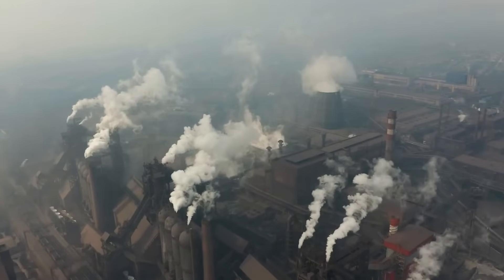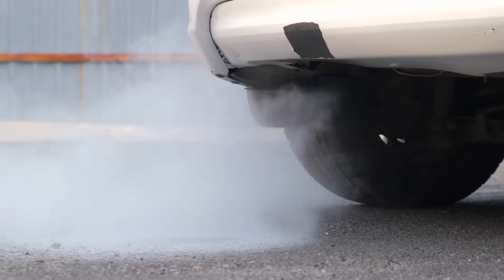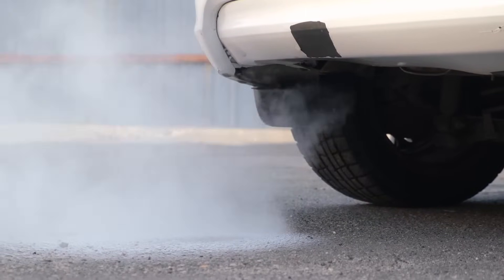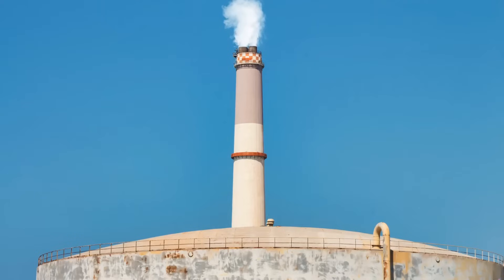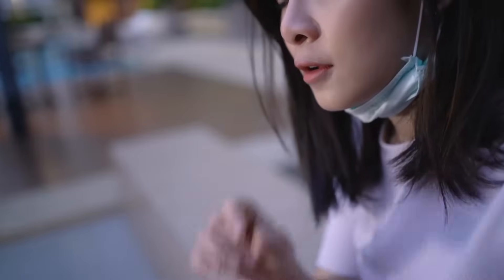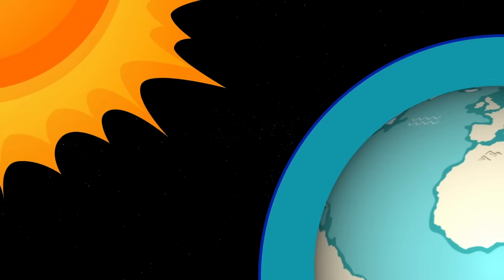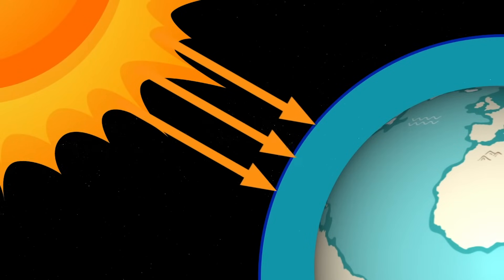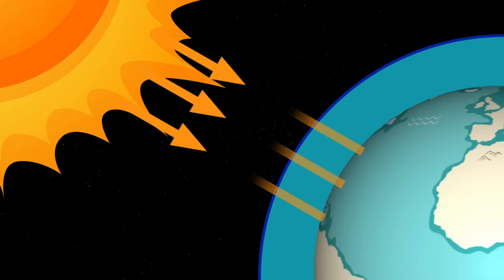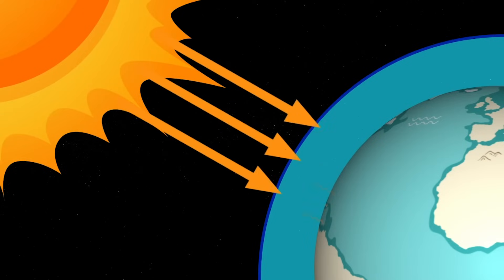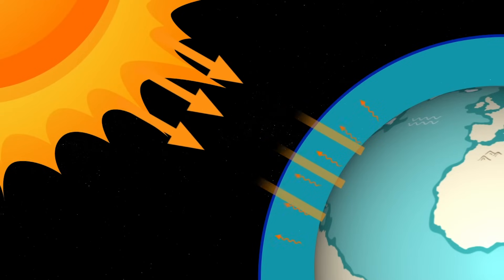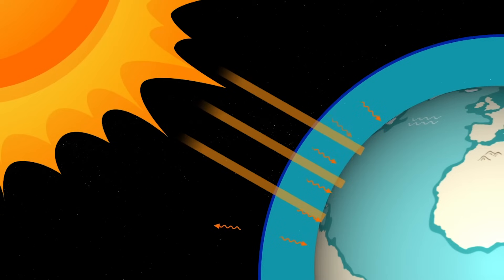The burning of fossil fuels has another impact on the earth: air pollution. The emissions released into the air when fossil fuels are burned are harmful to organisms, including people. The emissions also include greenhouse gases that trap solar radiation in the atmosphere and increase the rate at which the earth is warming — a process called human-induced climate change.